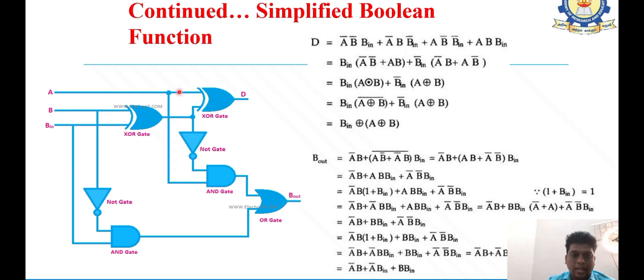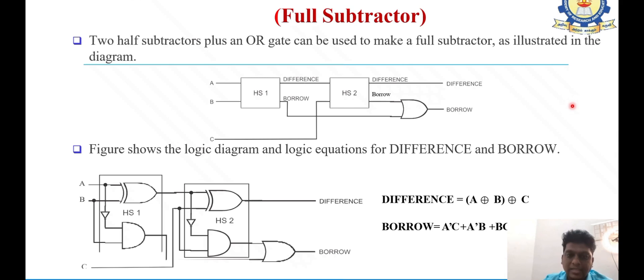The final output we get is A bar B plus A bar B in plus B B in. The full subtractor can be implemented with two half subtractors along with one OR gate. These two half subtractors represent the borrow outputs. The difference is A exclusive-OR B exclusive-OR C, and the borrow is A bar C plus A bar B plus B C, implemented with two half subtractors.